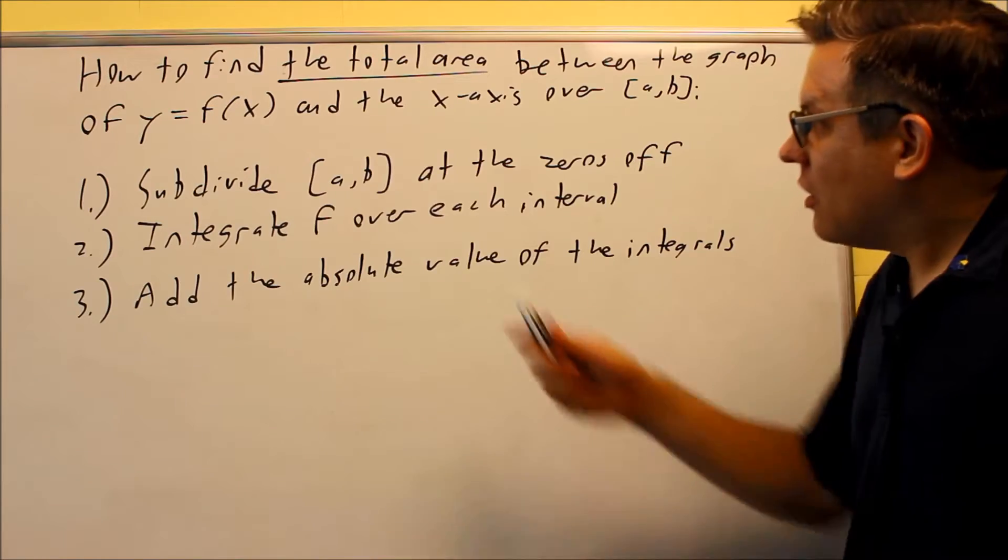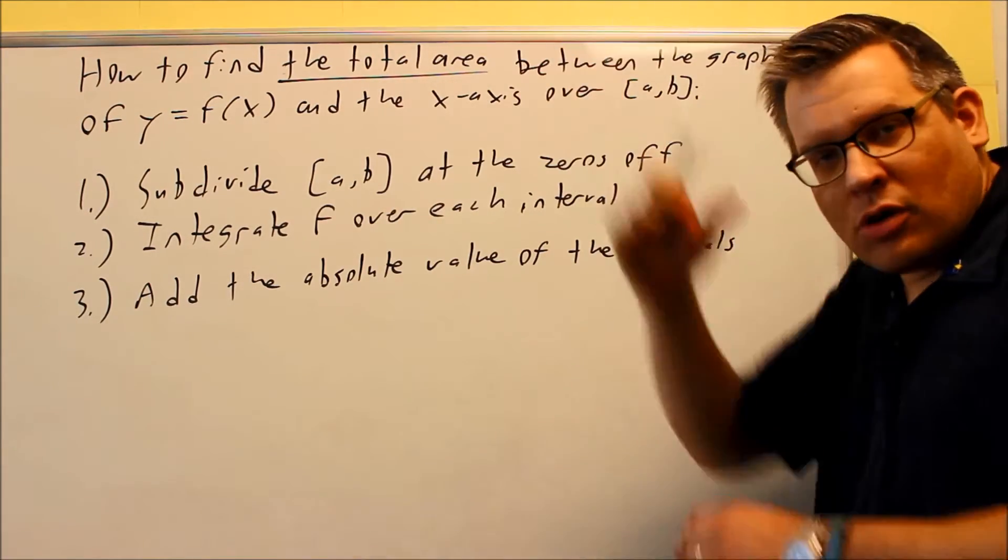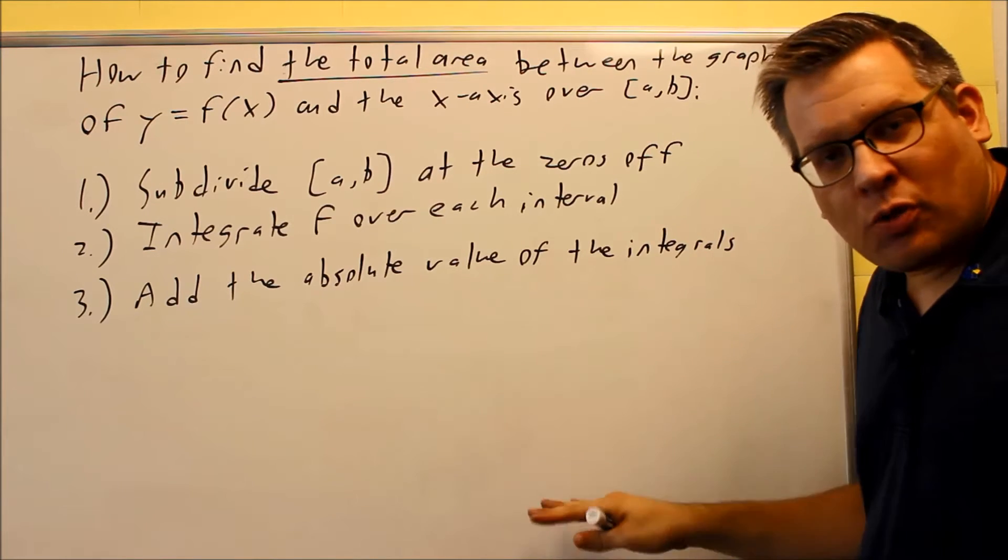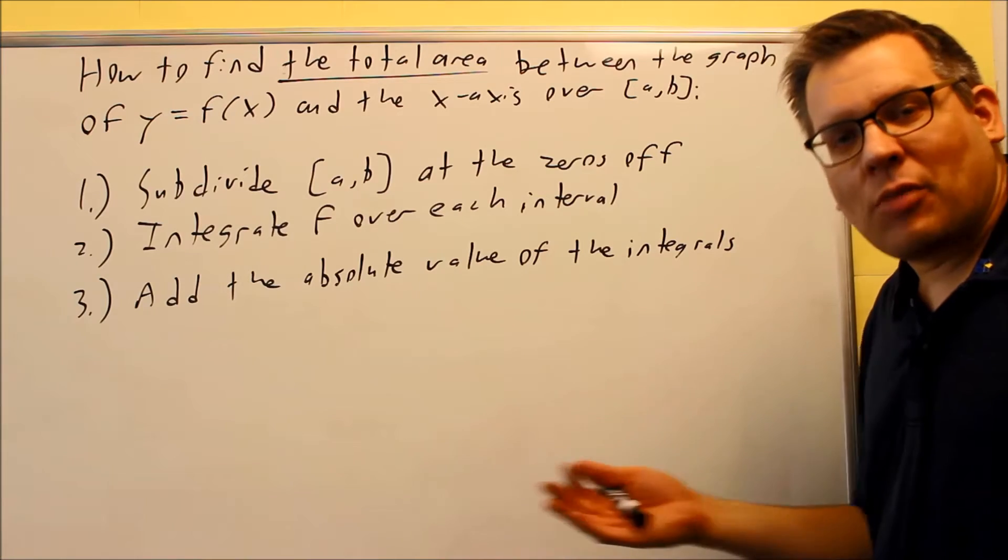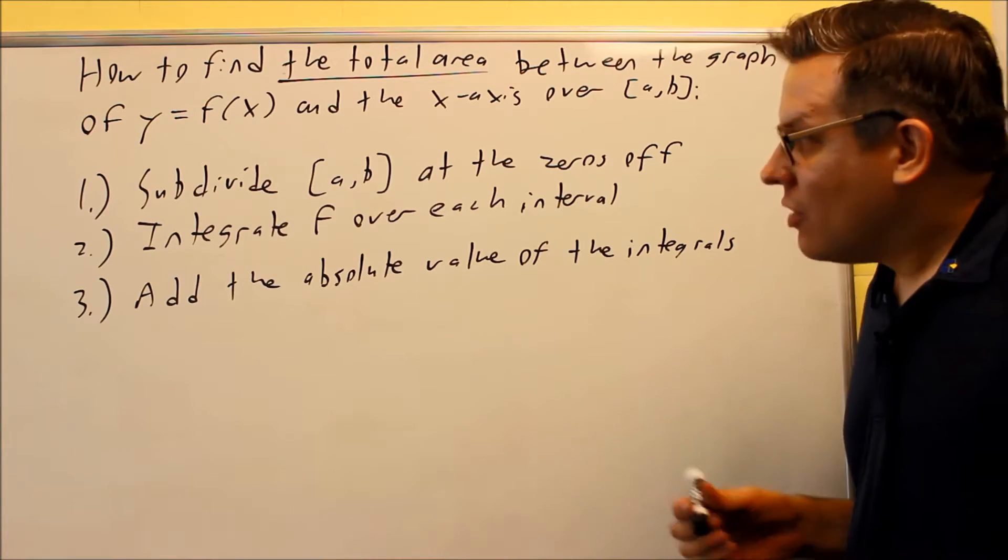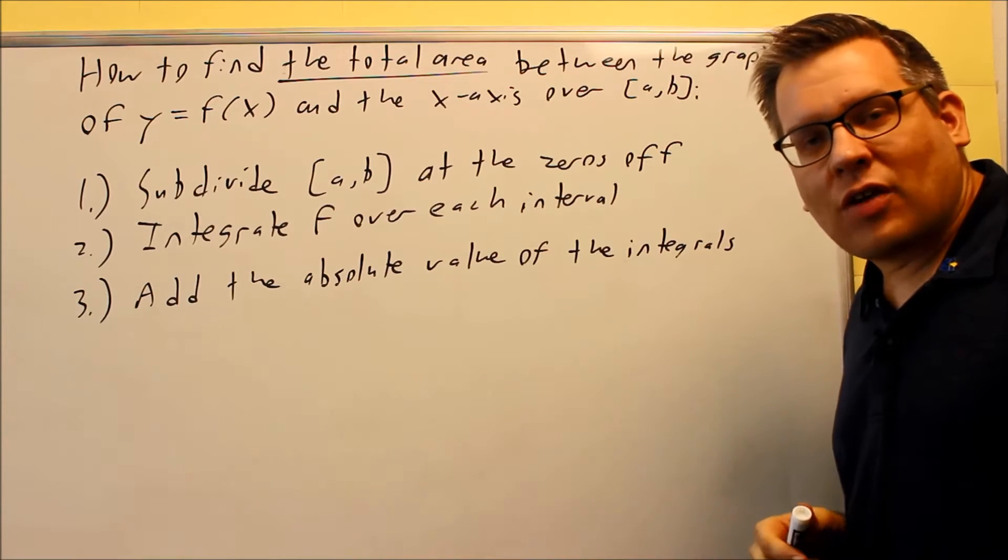So you have to consider a positive and a negative, doing that separately. Whenever it asks for a total area between the graph, it wants the total sum of those two areas. We're ignoring the fact that even though it's below the x-axis, because we're doing an absolute value, it's technically going to make that area positive. So whenever you see that total area, these are the procedures that you have to follow.